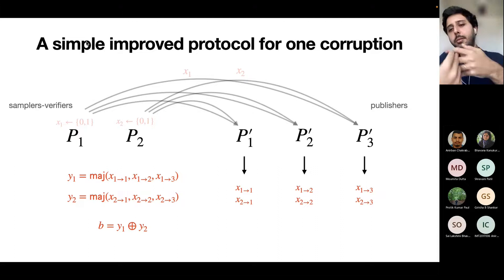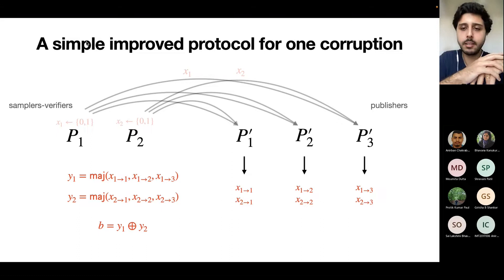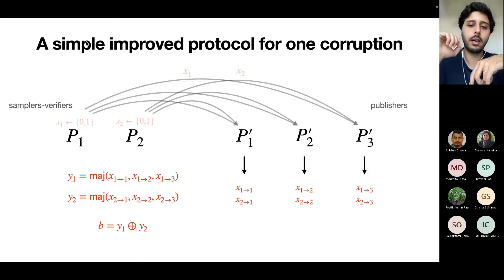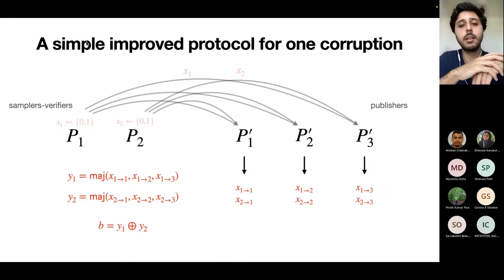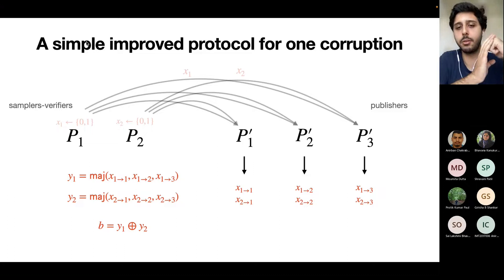If you corrupt a publisher, say P-prime-3, you can lie about what you got from P1 and P2. But P-prime-1 and P-prime-2 are honest, and P1 and P2 sent the same value to everyone. These values are uniformly random. So majority enforces that whatever P-prime-3 does doesn't influence the output, and we get a uniformly random bit.